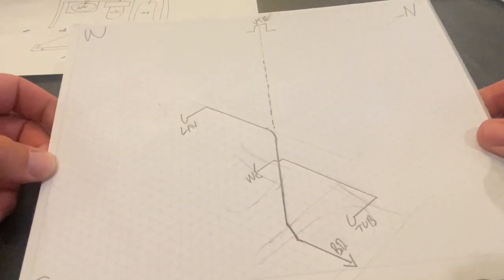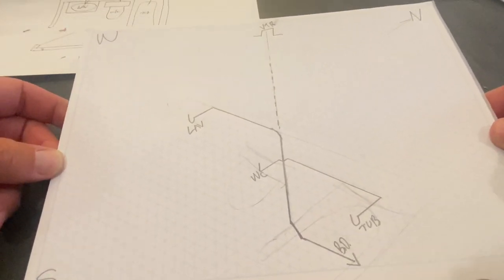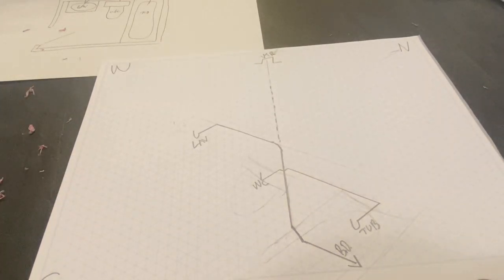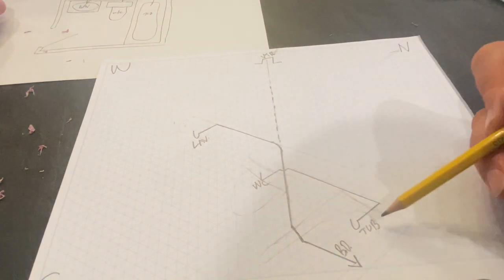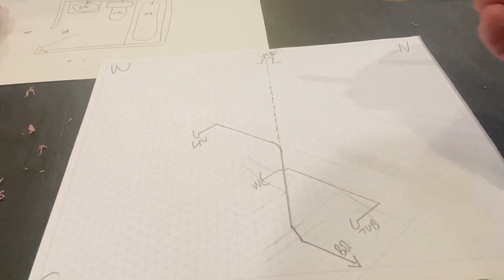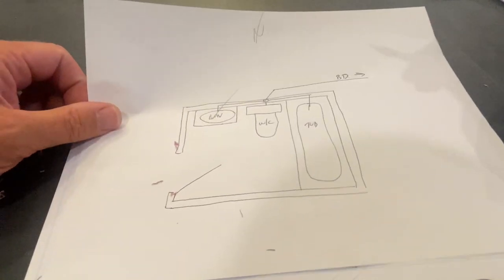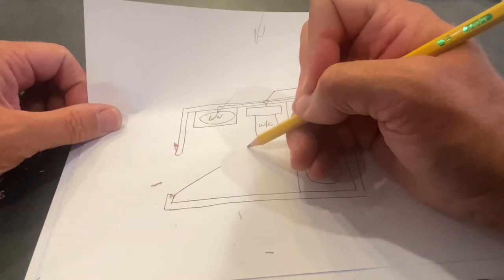There you have it. Let me tell you something, there is nothing wrong with this. This is 100% legit. We have everything labeled. We have our laboratory labeled, we have our water closet labeled, we have our tub labeled, and we have our vent through roof.